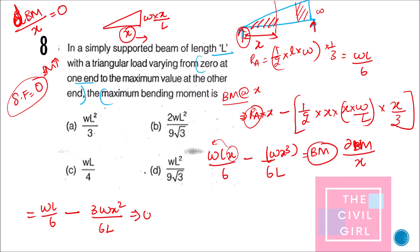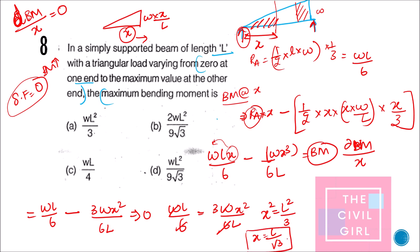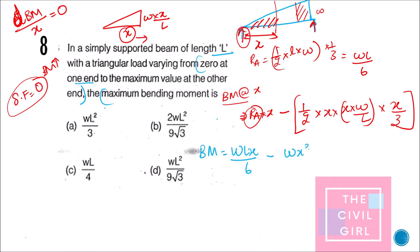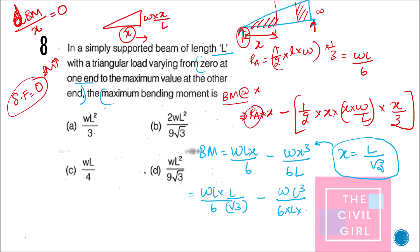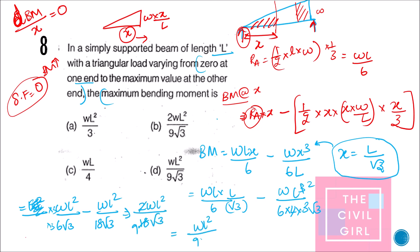At x = l/√3 the shear force is zero, confirming this is the location of maximum bending moment. Substituting x = l/√3 back into the bending moment expression yields M_max = wl²/(9√3). The answer is option D: wl²/(9√3).